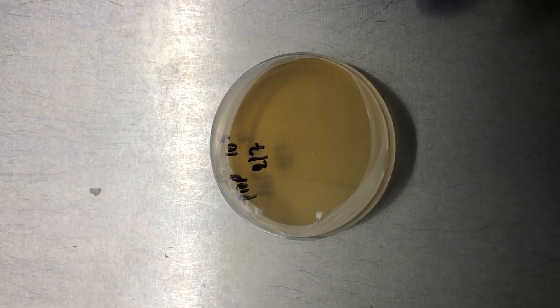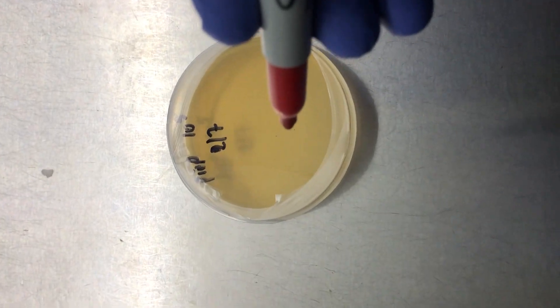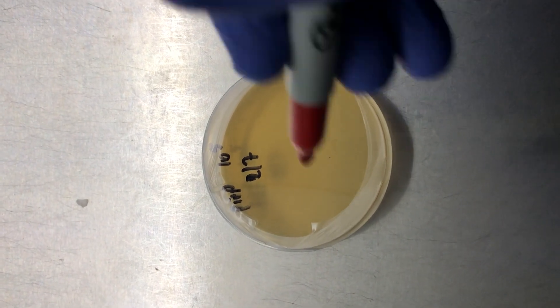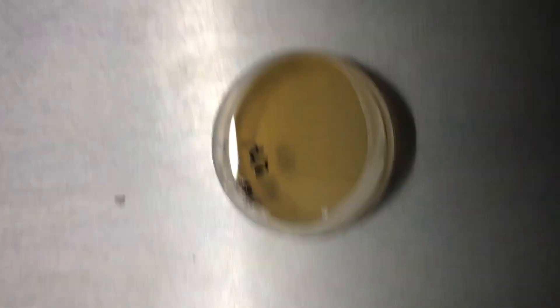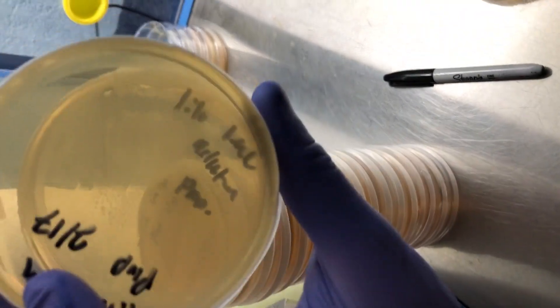I could even grab a microscope right now and take a loop full and put it under a slide and stain it and observe the structure of this organism. But if I just wait two or three more days, then it's going to reveal itself. So I'm pretty excited that my serial dilutions worked and the majority of my plates are negative.